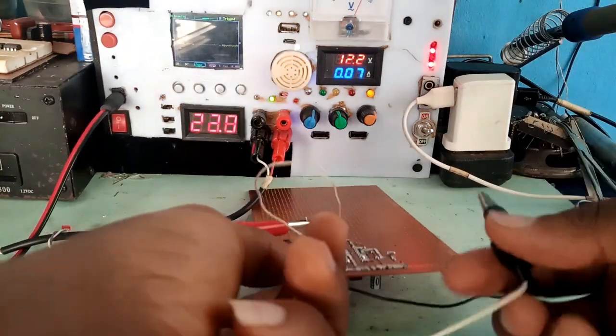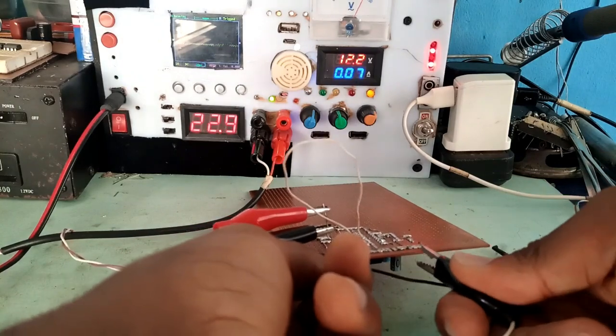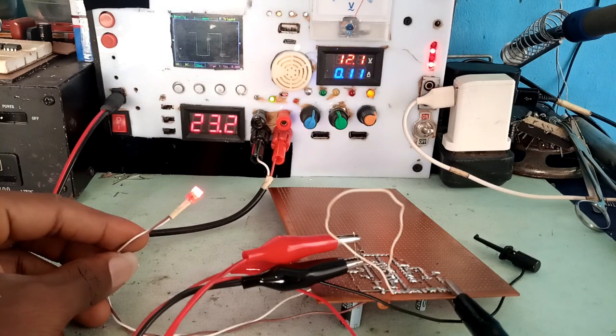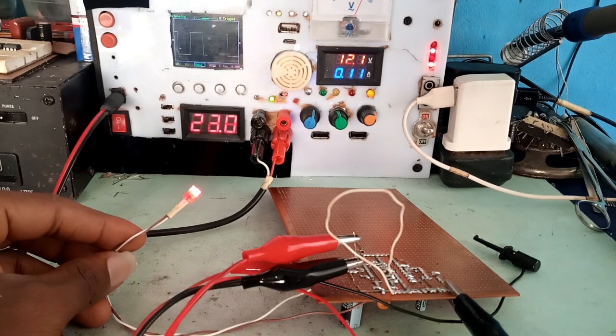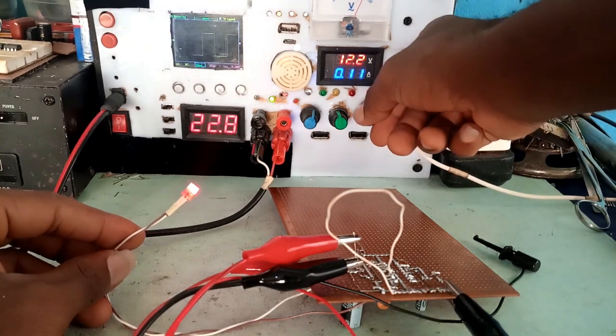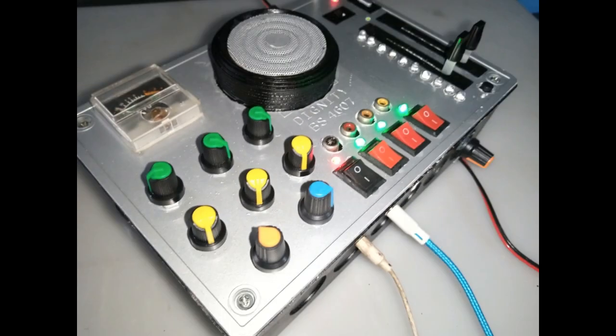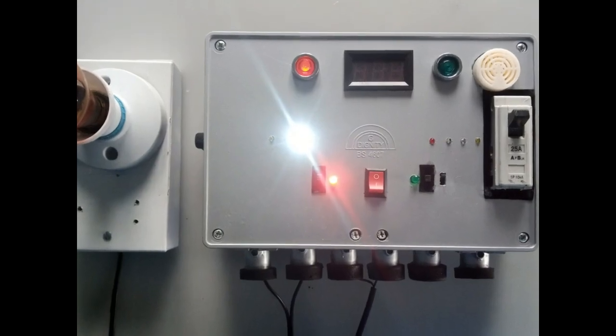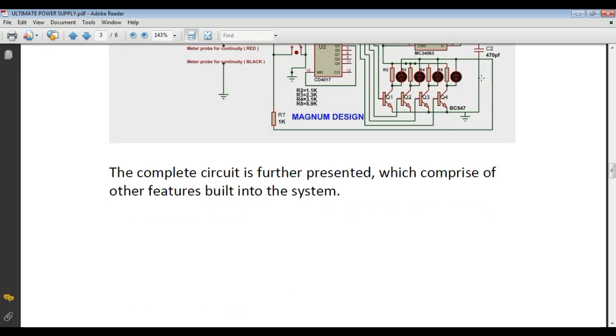I've used the power supply in test running several project developments even before I made this video and I'm glad it's serving the purpose of the build. Just that the physical look doesn't look okay, unlike other of my development like the FM transmitter, the automatic changeover system and many more. The detailed circuits are presented in a PDF form and you can access them via the video description below. What material should I use to repackage the system because I can't really settle for this. I would want your contributions on the comment section below.